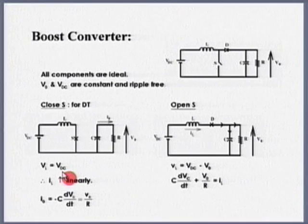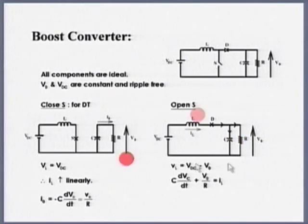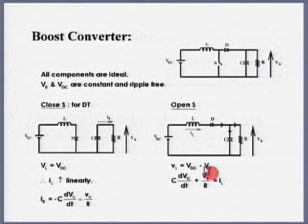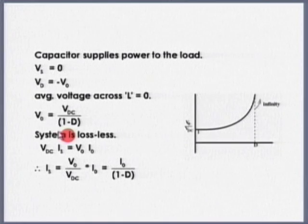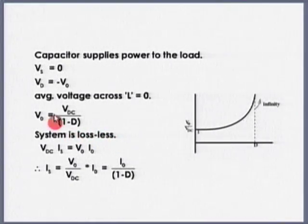Hence the name boost converter: I am storing energy in the inductor and transferring it to the capacitor, so capacitor voltage increases. Using the voltage balance condition — average voltage across the inductor equals zero — V_DC × D × T = (V_DC − V_out) × (1 − D) × T, which gives V_out = V_DC / (1 − D). For any value of D, V_out is higher than V_DC.